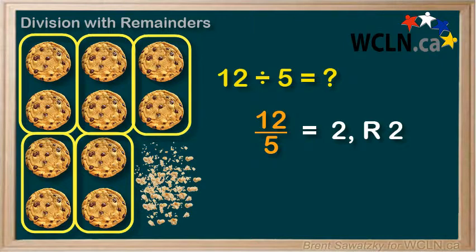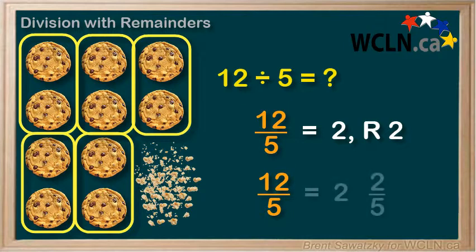So what happens if we crunch up the remaining two cookies into a bunch of crumbs? We could then divide the crumbs into five little piles and share them among our five friends. So we could write our answer as two and two over five.